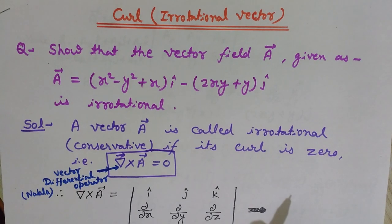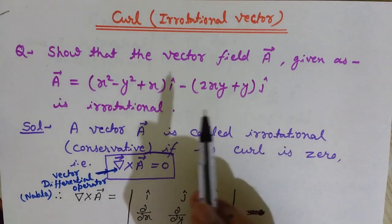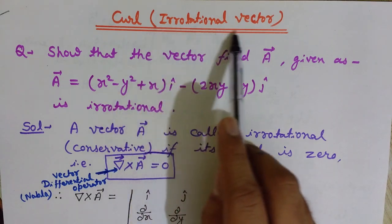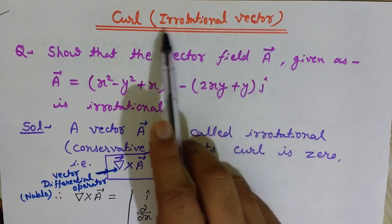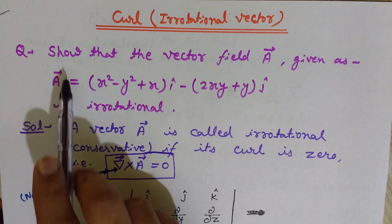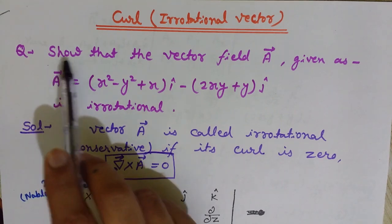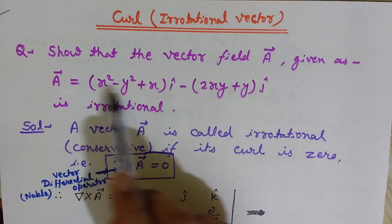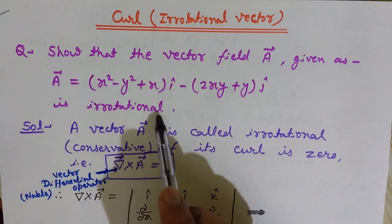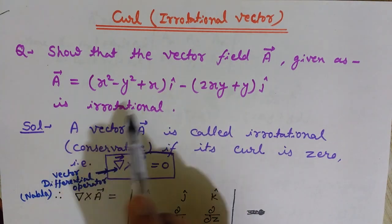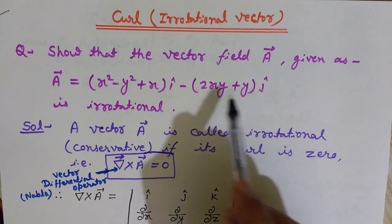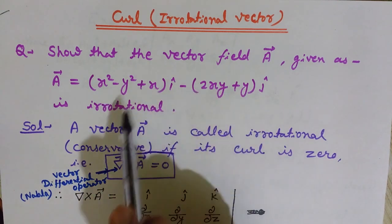Hello friends, welcome back to Engineering Made Easy. I am Lalith Vasist. Today we will discuss the concept of irrotational vectors. Our problem is to show that a given vector field A is irrotational.